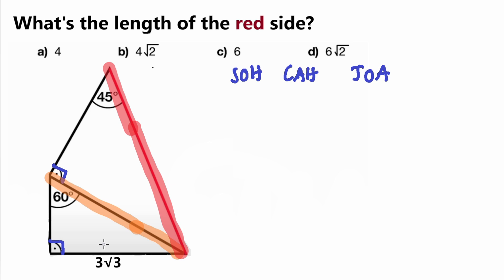When looking at the bottom triangle, we are always going to work from the perspective of the angle. The known side length — 3 over square root of 3 — is the opposite side relative to the 60-degree angle, and the orange side length is the hypotenuse of the triangle. So we need to find which trig function relates opposite and hypotenuse.